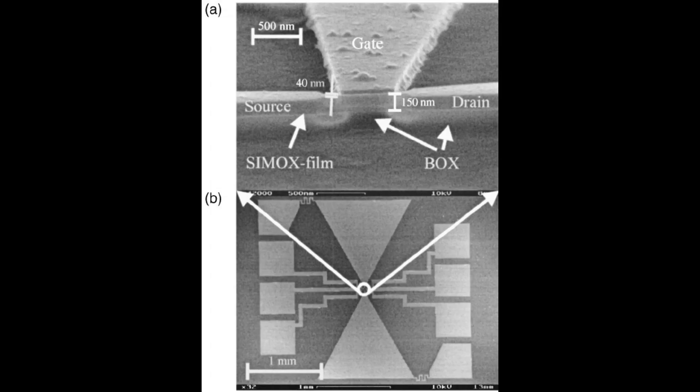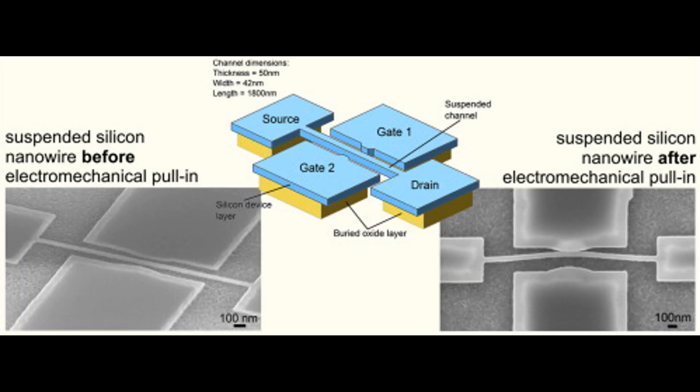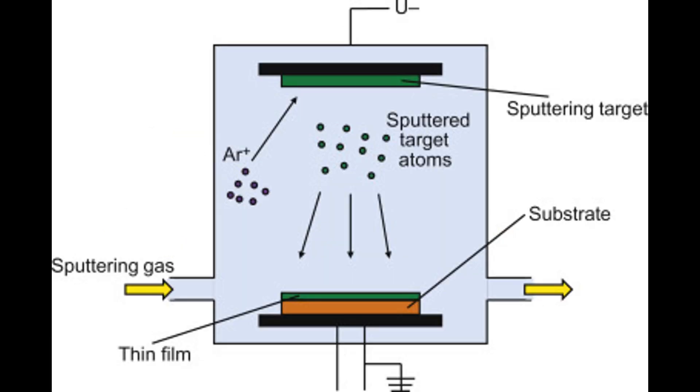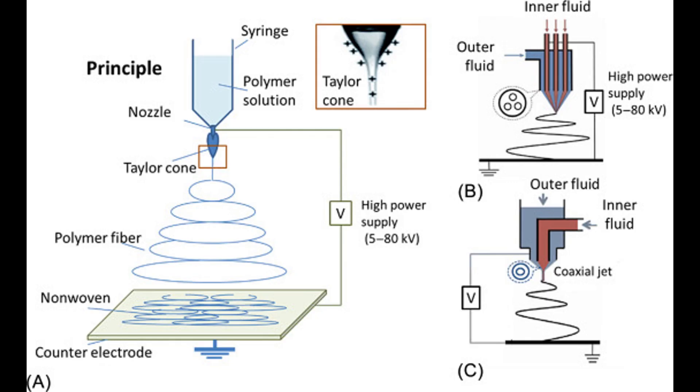This allows researchers to study the properties of nanowires in a more controlled environment and to manipulate them more easily. Suspended nanowires can be fabricated using a variety of techniques, including chemical vapor deposition, physical vapor deposition, and electrospinning.